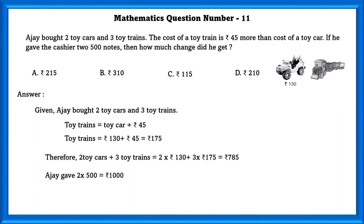Ajay gave two 500 notes, which is equal to 1000 rupees. So, in order to find the change, we have to subtract 1000 and 785. If we do that, we will get 215 rupees.